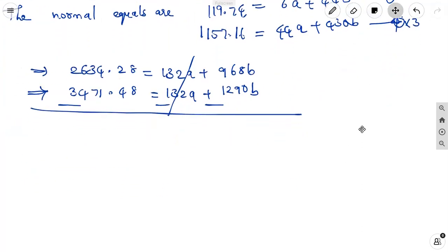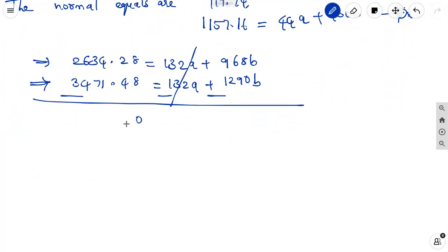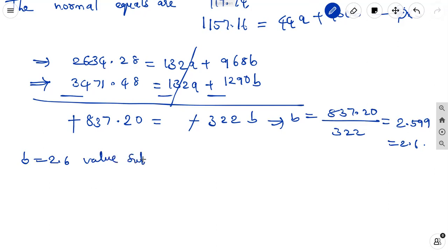Solving these two, minus minus, these two get cancelled and after the subtraction we are getting 837.20 with negative equal to negative 322b. B equal to 837.20 by 322. It will by using the calculator we are getting 2.599, so it is corrected to 2 decimals 2.6. B is equal to 2.6.